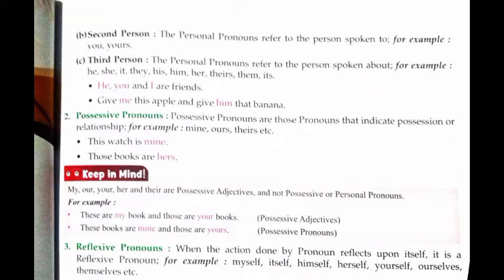अब आते हैं possessive pronoun। Possessive pronouns indicate possession और relationship। Possession means जैसे मैं बोलूँ 'This watch is mine' — यह मेरी घड़ी है — तो उस घड़ी पर मेरा अधिकार है, वो possession show कर रहा है। Relationship means जैसे 'He is my brother' — वो brother है मेरा — तो यह relationship show कर रहा है। For example: mine, ours, theirs — यह possessive pronouns हैं।